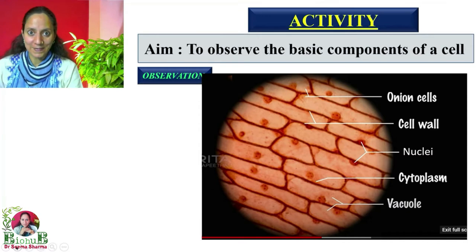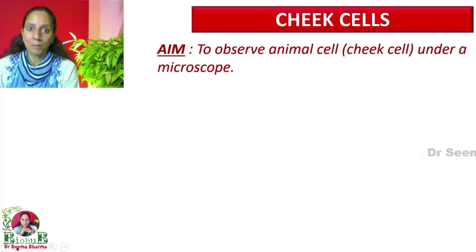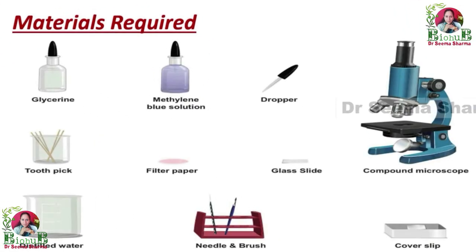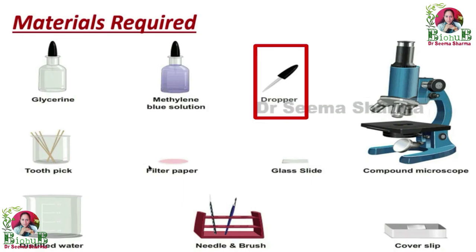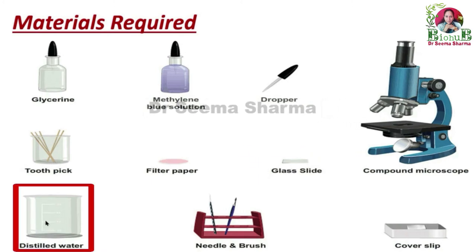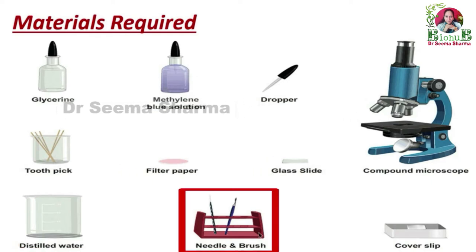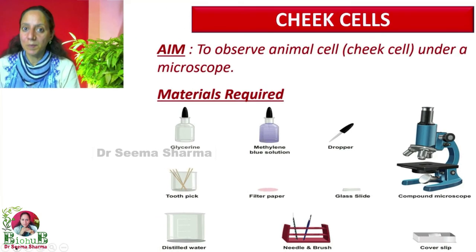These are the basic components of a plant cell. Now let's learn about the basic components of an animal cell. For that we are taking cheek cells. The aim is to observe an animal cell — cheek cell — under a compound microscope. Materials needed: glycerin, methylene blue, dropper, toothpicks, filter paper, glass slide, water (distilled or tap), needle, brushes, and a compound microscope.